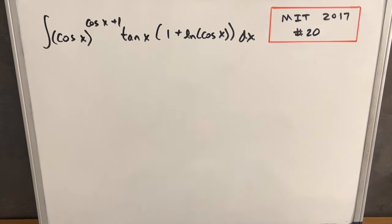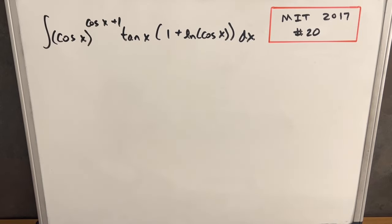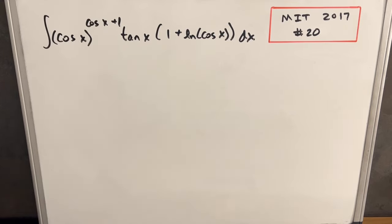We have a really long, complicated-looking integral from MIT Integration Bee 2017, Problem 20. In a case like this, when there's just a lot of things going on, they kind of want to scare you into quitting or moving on. But the important thing is just to break this up into pieces, try to simplify a little bit at a time and get it into something we can handle.